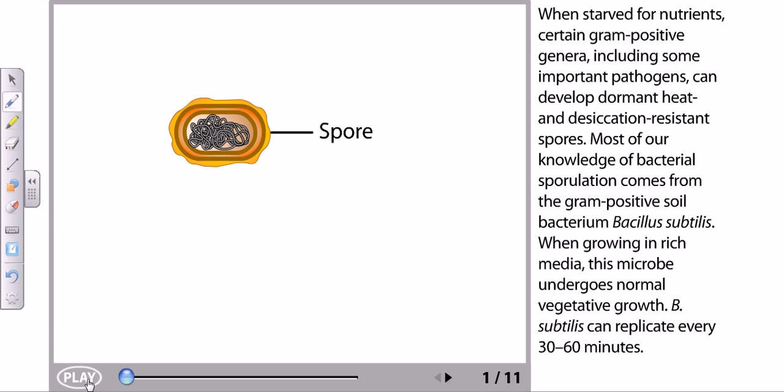When starved for nutrient conditions, certain gram-positive genera including some important pathogens can develop dormant heat-resistant spores. Most of our knowledge of bacterial sporulation comes from the gram-positive soil bacterium Bacillus subtilis.